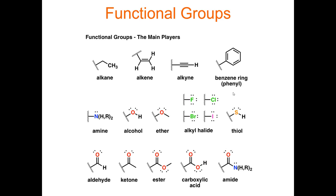Remember that a functional group is the idea that although there's potentially an infinite number of ways we can arrange atoms in an organic molecule to create a unique new molecule, we can generally group all of these molecules into categories based on what specific atoms they have and in what specific order those atoms are in. We call those patterns functional groups. Functional groups for hydrocarbons are those we've already mentioned.